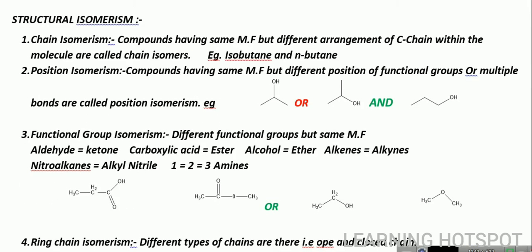Now we are going to discuss Structural Isomerism. First we have chain isomerism. As the name indicates, chain isomerism — compounds having same molecular formula but different arrangement of carbon chain within the molecule — are called chain isomers. The same molecular formula is common across all isomerisms. But what's different? There is a difference in the carbon chain. The example of chain isomerism is isobutane and butane, which we discussed earlier in this video.